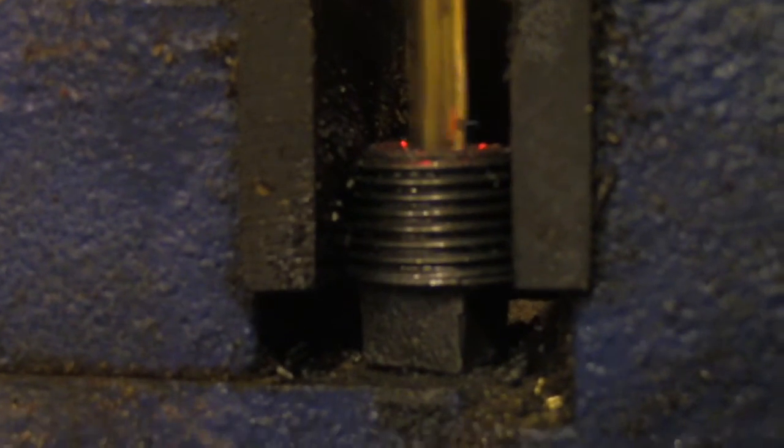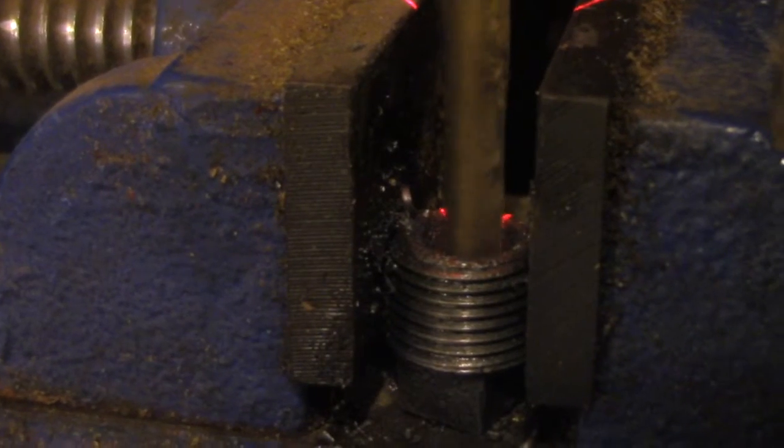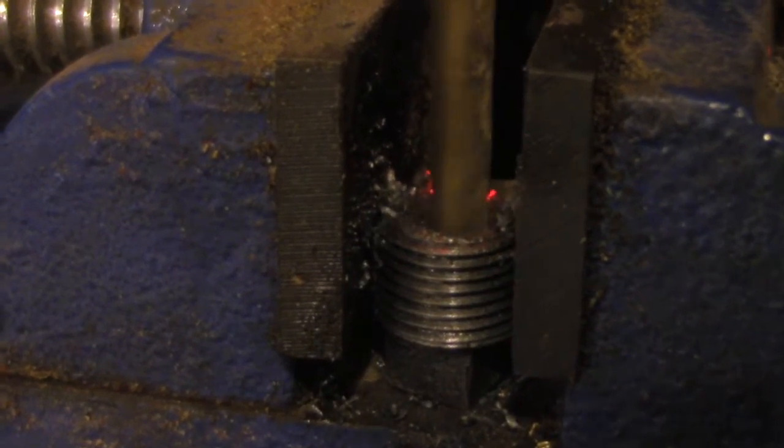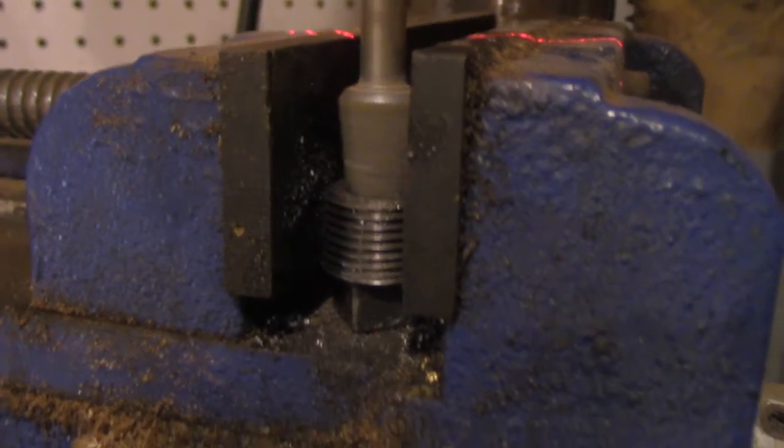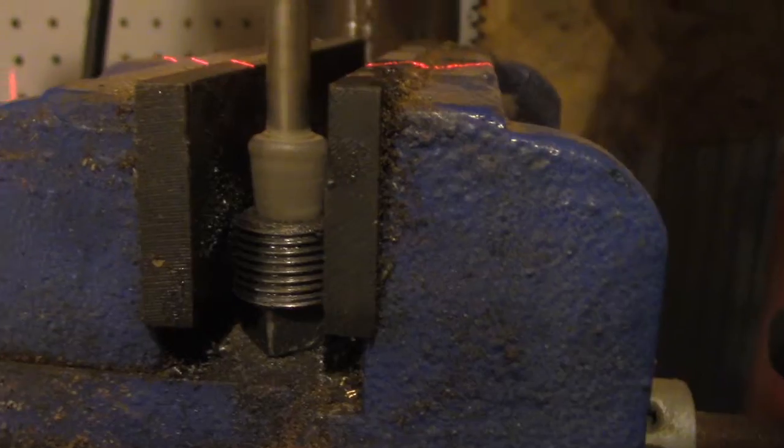Once we've done that, we'll take a drill bit that's a little bit bigger and drill about a quarter of the way through the plug. Then we're going to take our conical sanding bit and smooth out the convergent section of our nozzle.